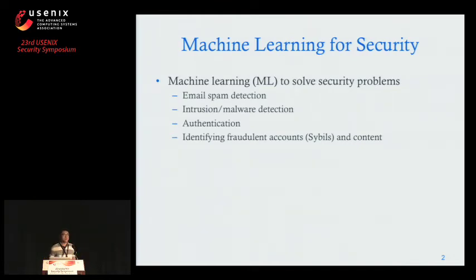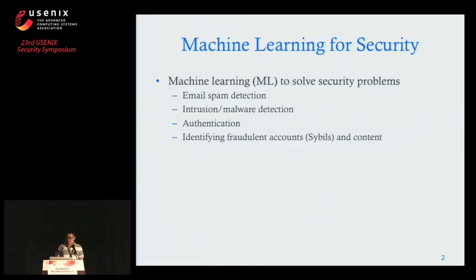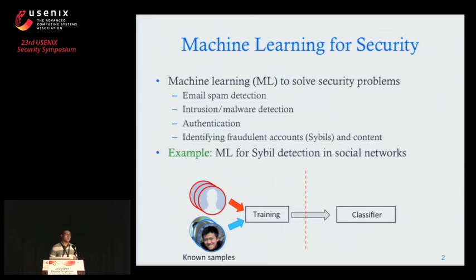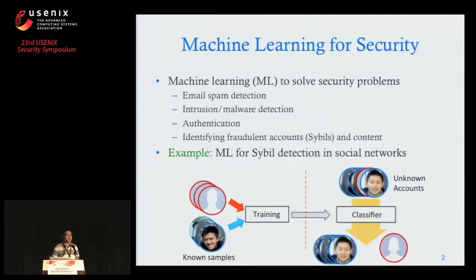Machine learning has become a very successful tool in different security domains. We have machine learning classifiers to filter email spam, to identify network intrusions and malware, and more recently we use machine learning to build defenses to catch spammers and fake accounts in social networks. Typically you start with some accounts that you know — good accounts or fake accounts — feed this data to a training model, which generates a statistical classifier you can use to classify unknown accounts.